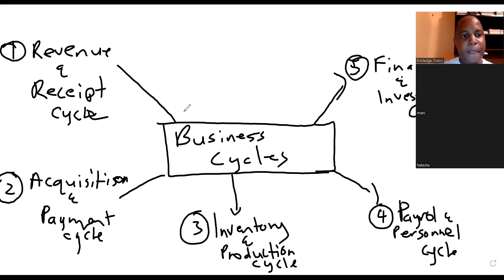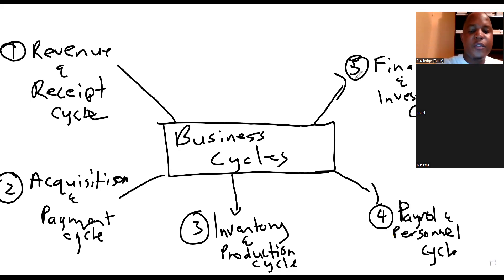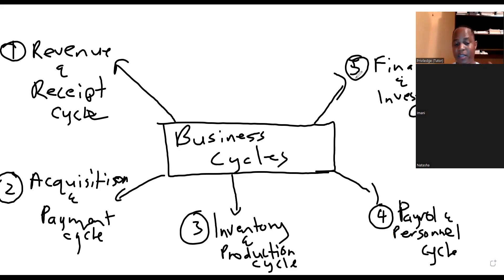These are the five important business cycles to note. The Revenue and Receipt Cycle is where our point of departure will be in this session. The core behind the Revenue and Receipt Cycle is to generate revenue or to make sales — that's really the essence of it, sales and generating revenue for the business.